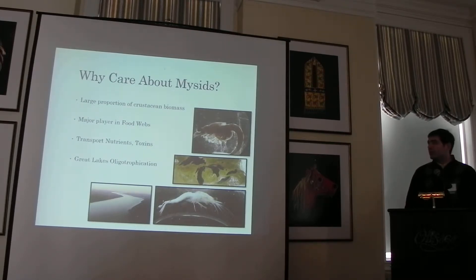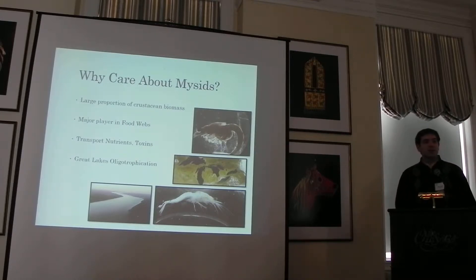They're a major player in the food web. They eat detritus, phytoplankton, zooplankton. They eat themselves. They're preyed upon by their own competitors, forage fish, which would include things like alewife in the Great Lakes, one of the major predators of mysids there. Also things like bloater and sculpins, and more prominently some of the upper Great Lakes in Ontario.